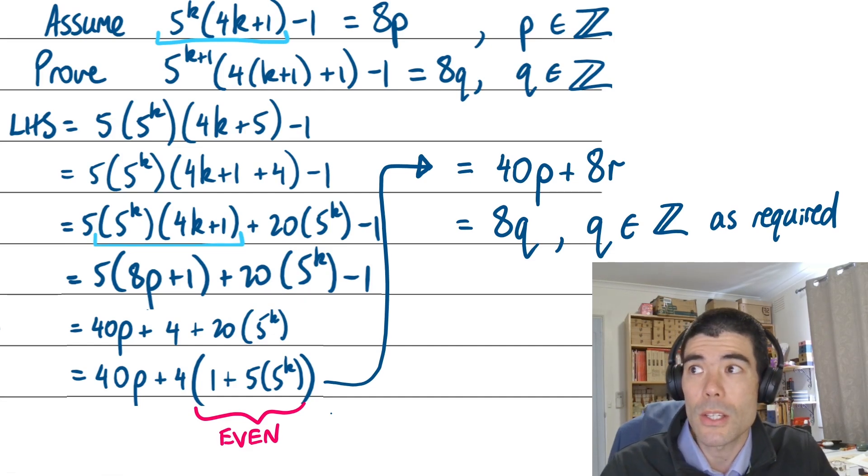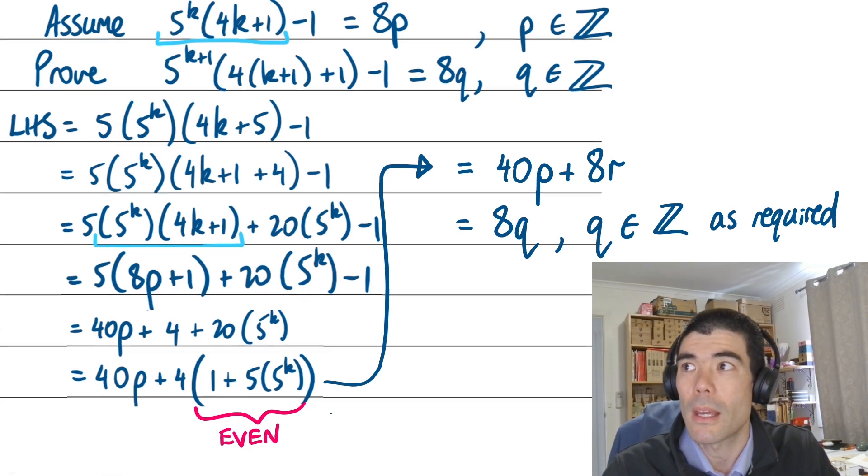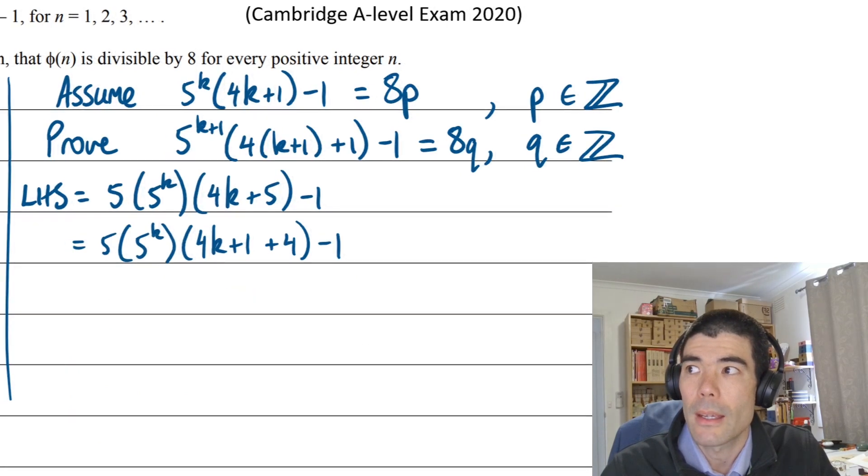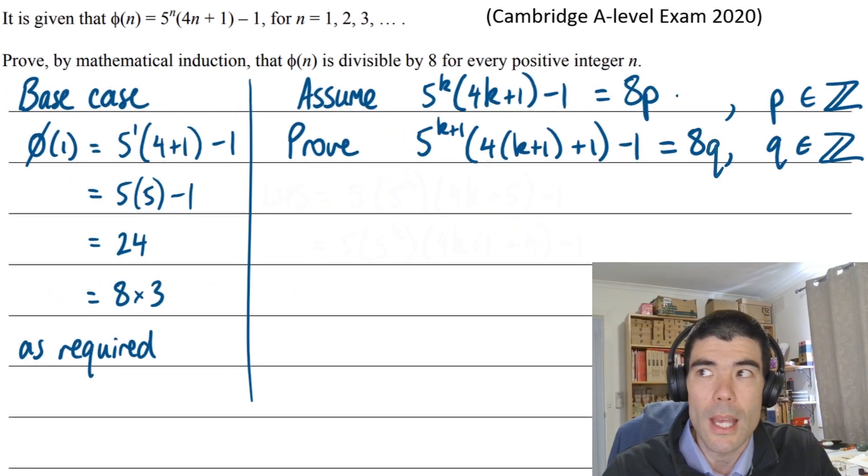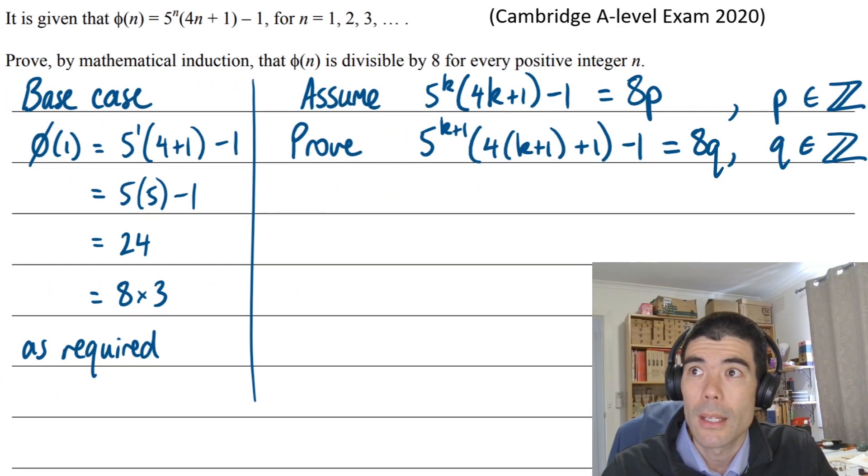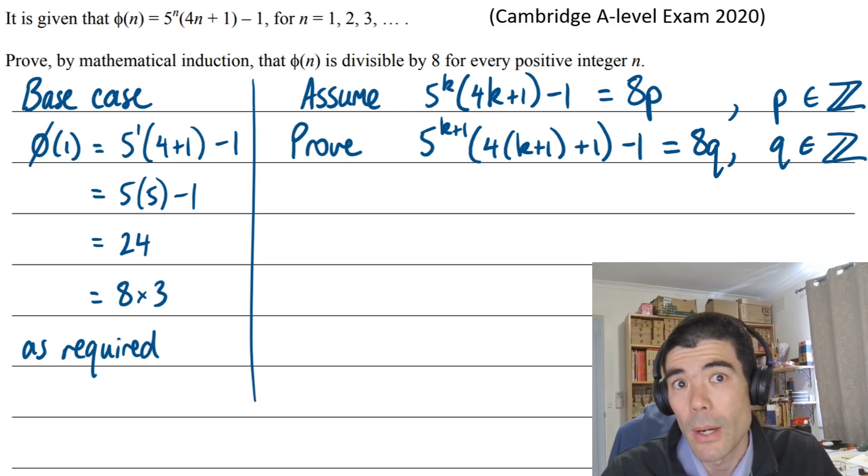That proof by induction is not that easy. There's quite a few algebraic steps there. But the setup is always the same base case. You're going to get one mark, write your assumption clearly, and then what you need to prove. You're probably getting two marks out of four or five. The rest of it, you have to make the proof somehow by using your assumption. I've got some more examples on proof by induction in the video I did last year.